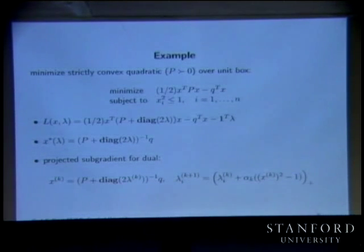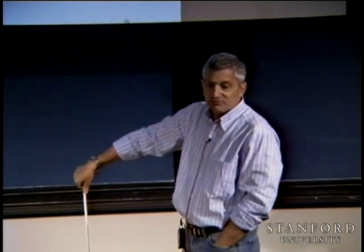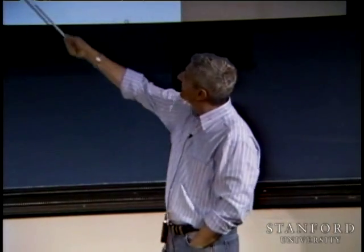You'd calculate P inverse q, and if that x is inside the unit box, you'd have the sense to say you're done. Otherwise, X7 is way big — ouch.